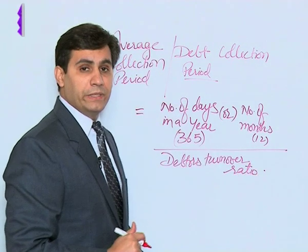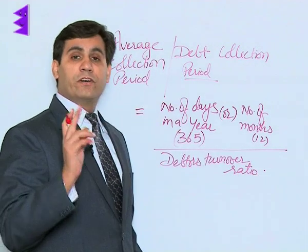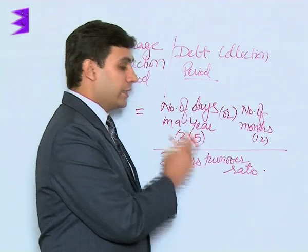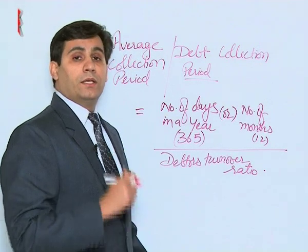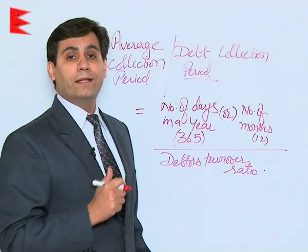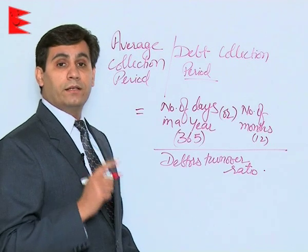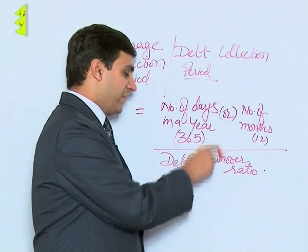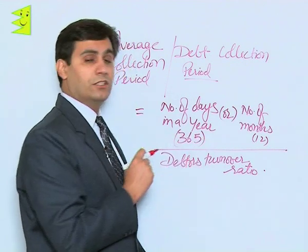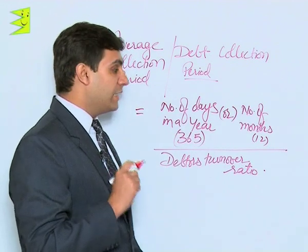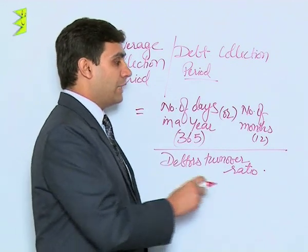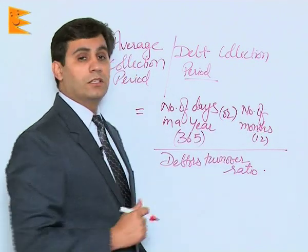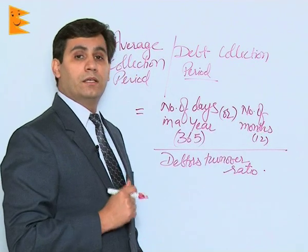In order to calculate debt collection period, first we need to calculate the debtors turnover ratio. Then, if we are required to calculate debt collection period in number of days, we write 365 divided by debtors turnover ratio. In case we are required to calculate in months, that would be 12 divided by debtors turnover ratio.